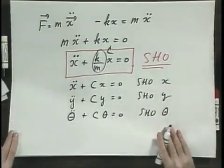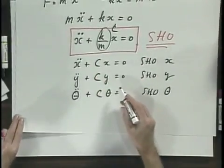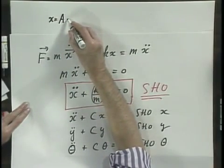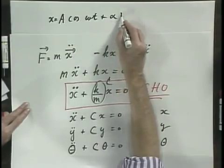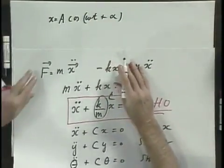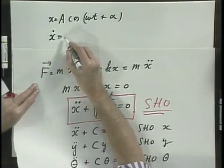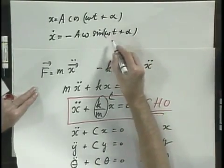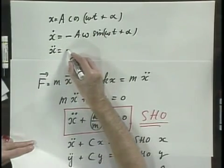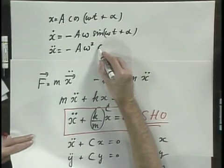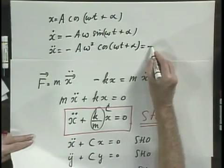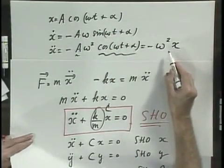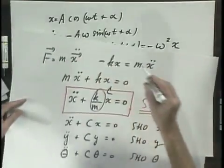The solution to any one of these equations is x equals A times the cosine of omega t plus alpha. Then x dot, which is the velocity, would become minus A times omega times the sine of omega t plus alpha. And x double dot would become minus A omega squared times the cosine of omega t plus alpha, which is the same as minus omega squared times x, since x equals A cosine of omega t plus alpha.